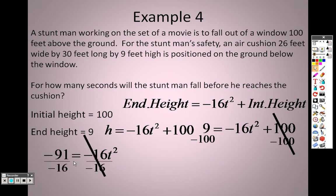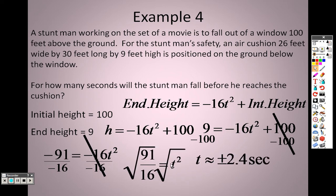So the negative 16s cancel out, the positives over there cancel out, and I can square root both sides to get plus or minus 2.4 seconds.